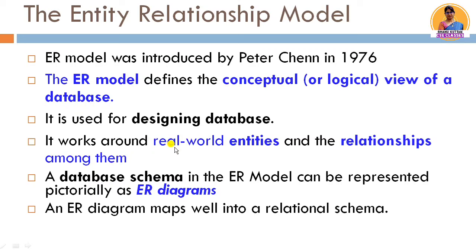The ER model works around real world entities and the relationships among them. Through the ER diagram we represent the ER model. When we construct the database schema, we represent it through an ER diagram and later map it to a relational schema, that is tables. For example, an employee entity and a department entity — the employee works for the department, so 'works for' is the relationship.